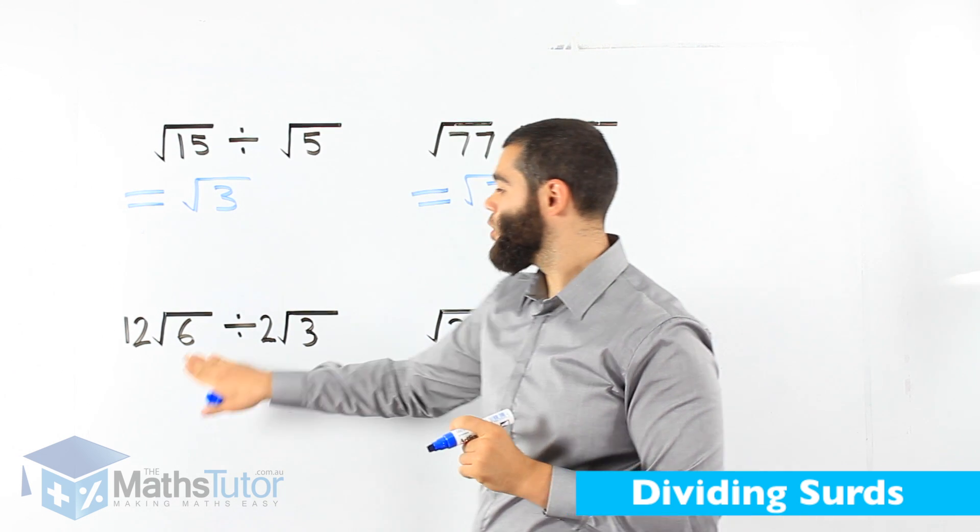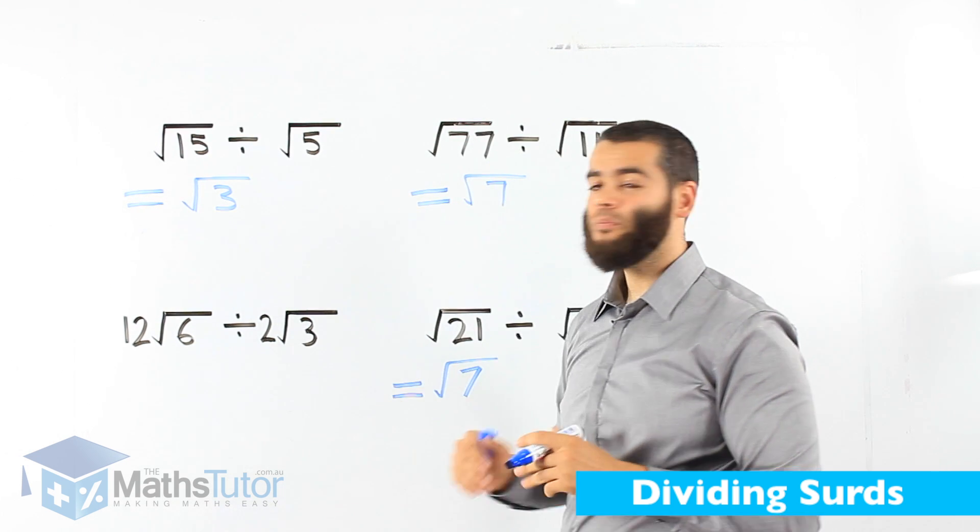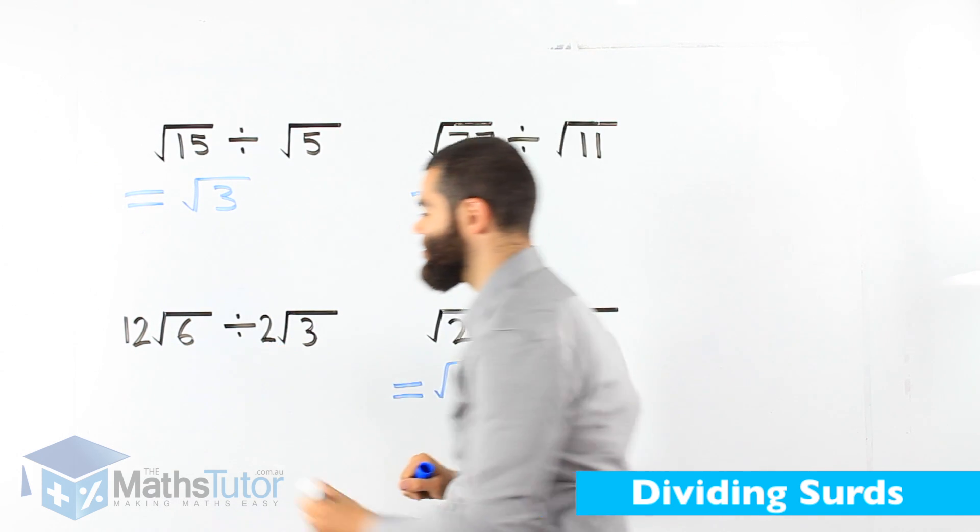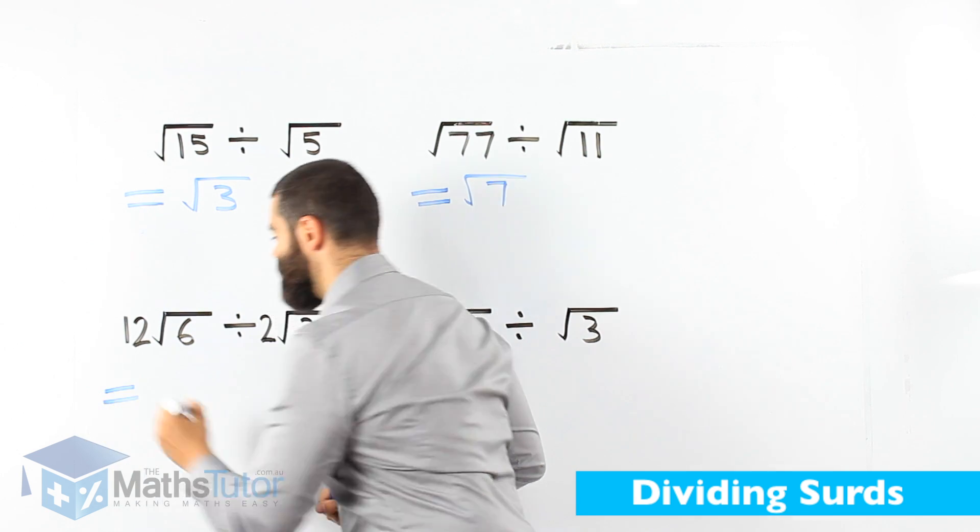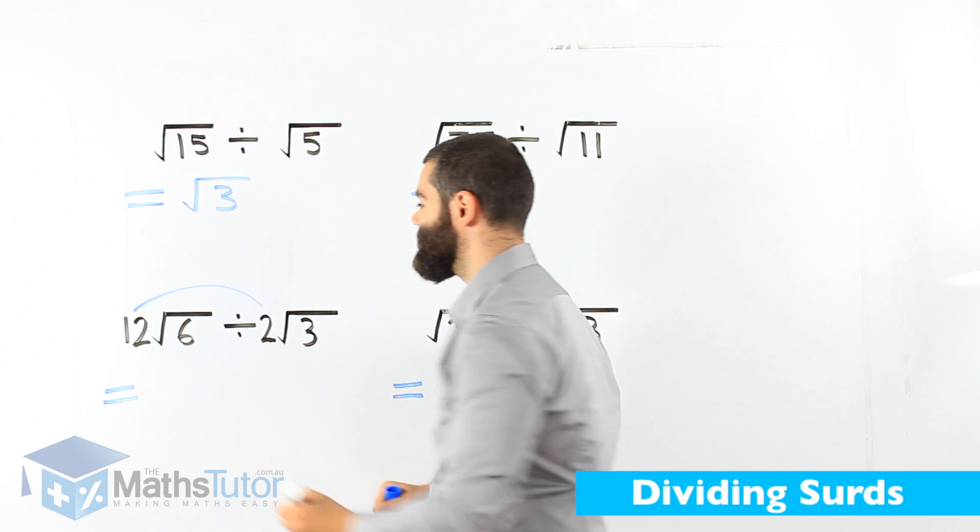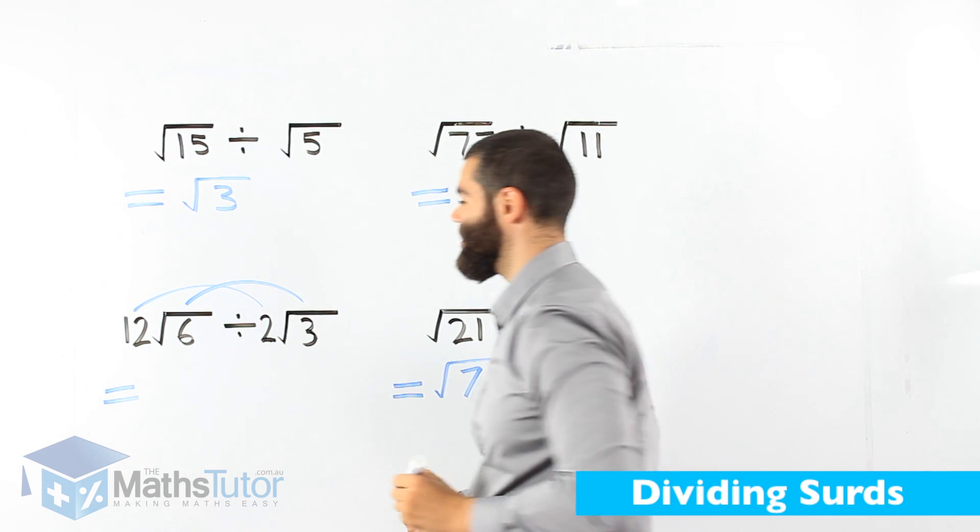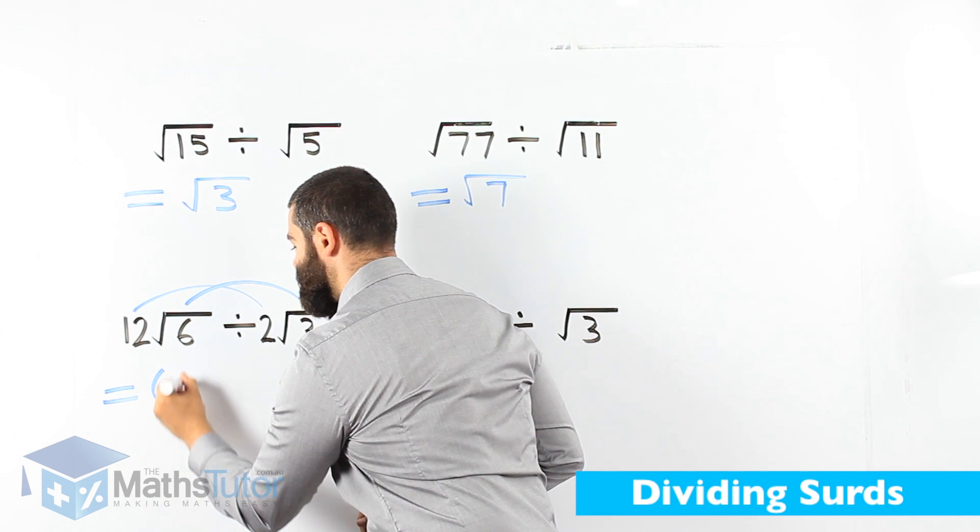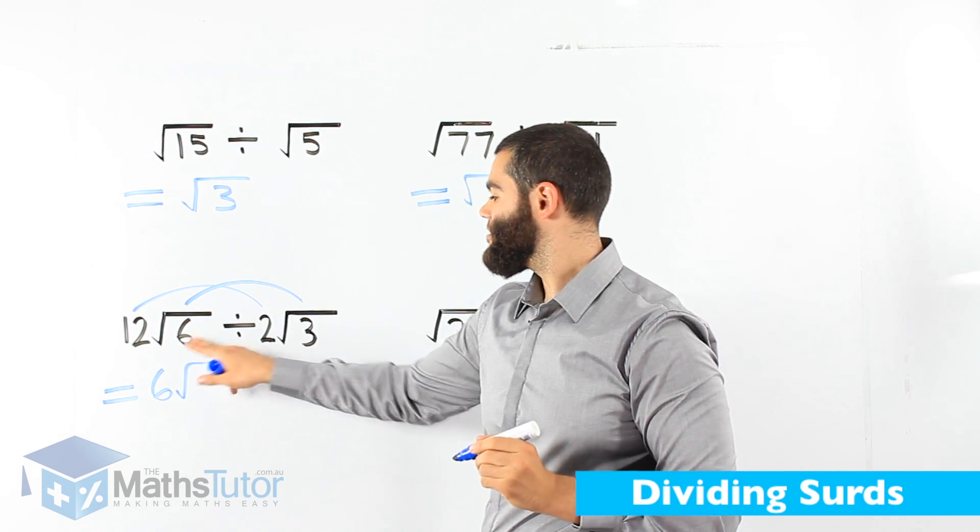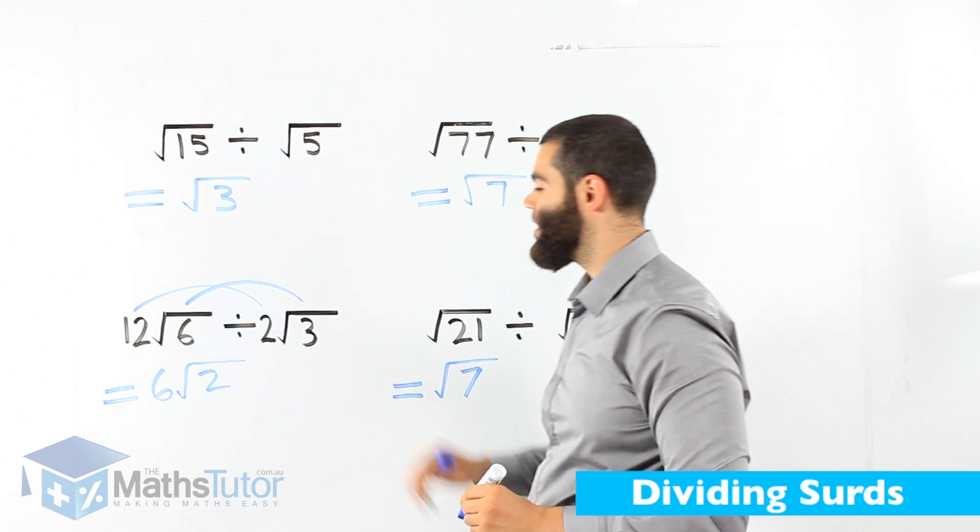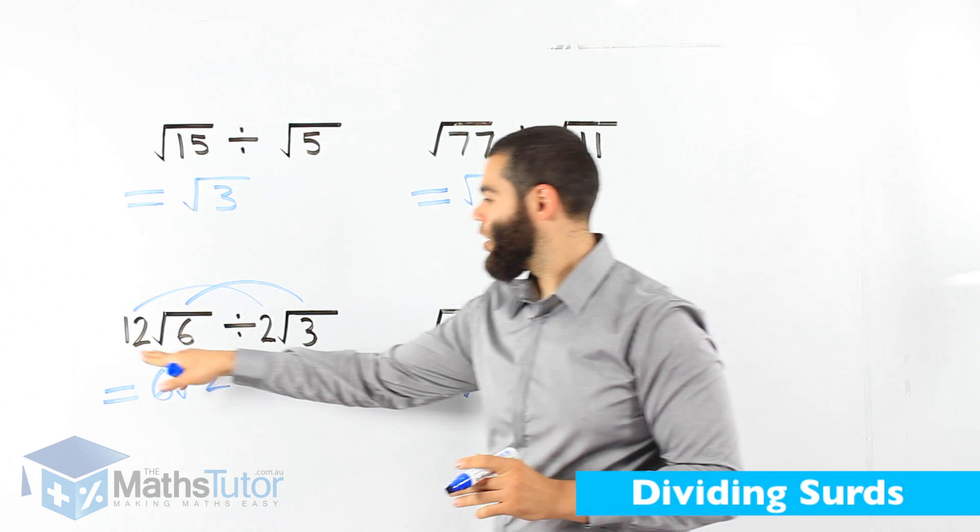Next one. We have 12 root 6 divided by 2 root 3. So we have numbers and we have also surds. How do we do that? The numbers divide together and the surds also divide together. 12 divided by 2 is 6. Put our root sign. 6 divided by 3 is 2. So our final answer is 6 root 2.